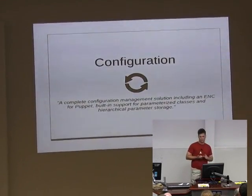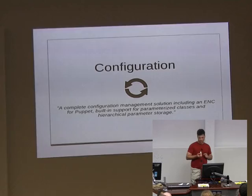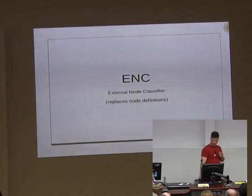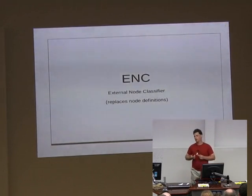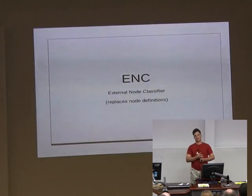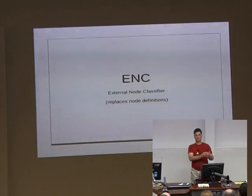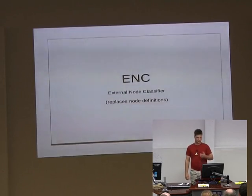For configuration management, this is the definition from Foreman's website as to what it does. Basically, an external node classifier is the way it integrates into Puppet. When a Puppet agent client connects to the Puppet server, the server will go off and talk to an external node classifier - which in this case is Foreman - to say, what should this node actually be?